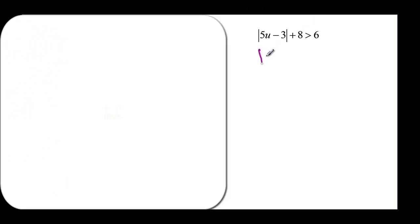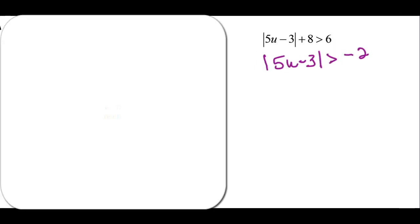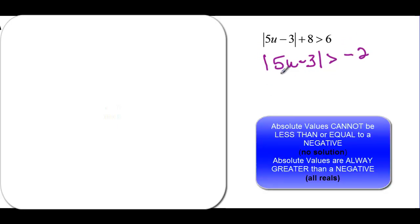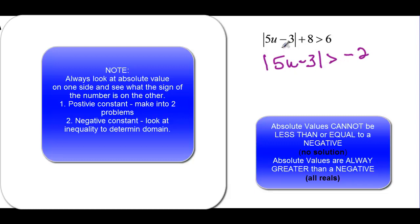Last problem: add 8 to both sides, so the absolute value of 5u minus 3 is greater than negative 2. Earlier we said an absolute value can't equal negative 2, but it can be greater than negative 2. In fact, an absolute value is always a positive value, so it will always be greater than negative 2. The answer is negative infinity to infinity — all real numbers.